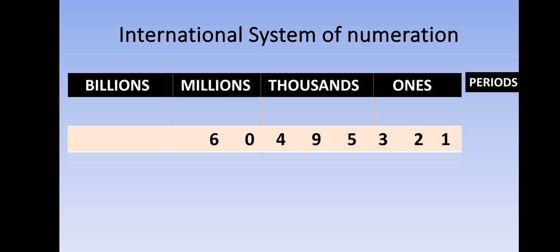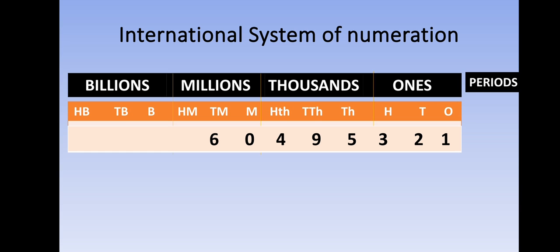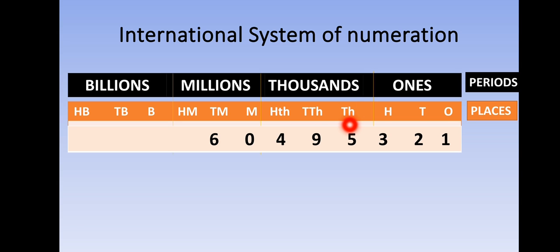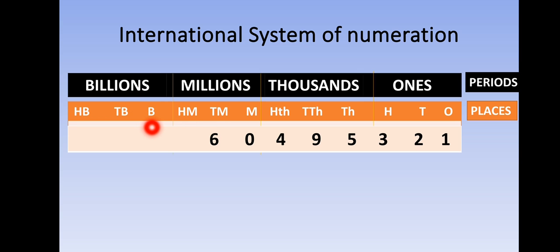Under these periods we have places. The places Ones, Tens, and Hundreds are in the Ones period. In the Thousands period we have Thousands, Ten Thousands, and Hundred Thousands. In the Millions period we have Millions, Ten Millions, and Hundred Millions. In the Billions period we have Billions, Ten Billions, and Hundred Billions.